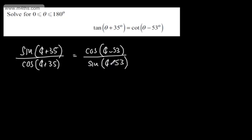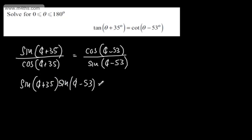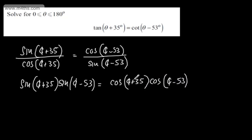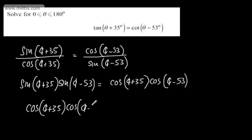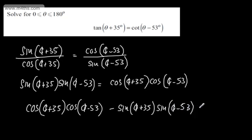If we multiply through by cos of theta plus 35 and sine of theta minus 53, we get on the left-hand side sine of theta plus 35 multiplied by sine of theta minus 53, equal to cos of theta plus 35 multiplied by cos of theta minus 53. Rearranging by subtracting the sine product from both sides, we get cos of theta plus 35 times cos of theta minus 53 minus sine of theta plus 35 times sine of theta minus 53 equals zero.